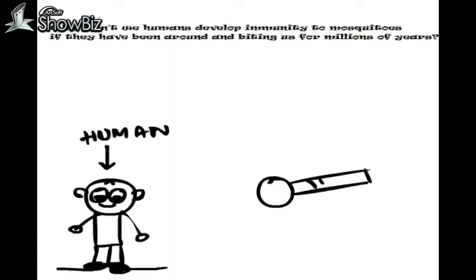Why didn't we humans develop immunity to mosquitoes if they have been around and biting us for millions of years?